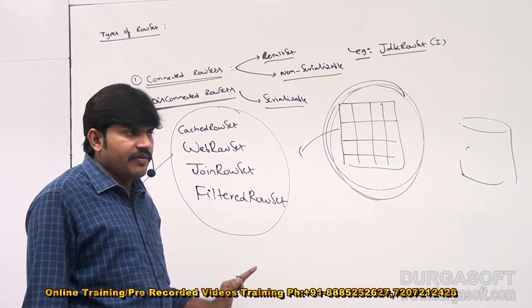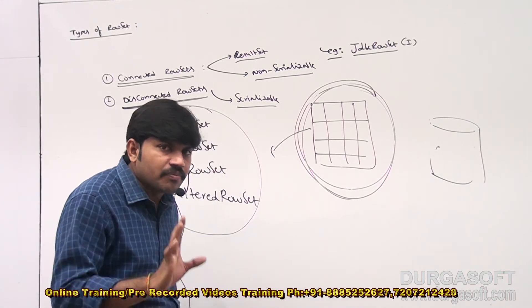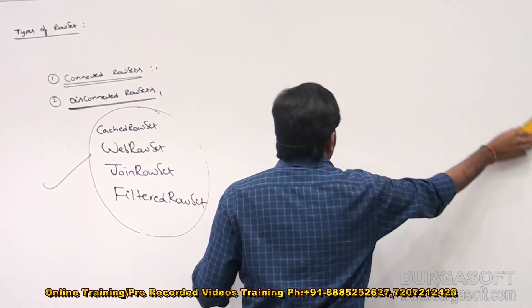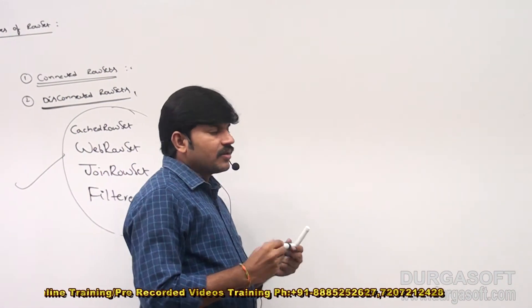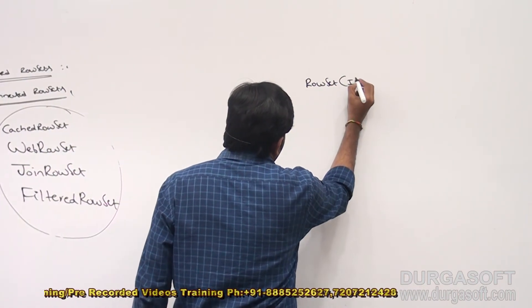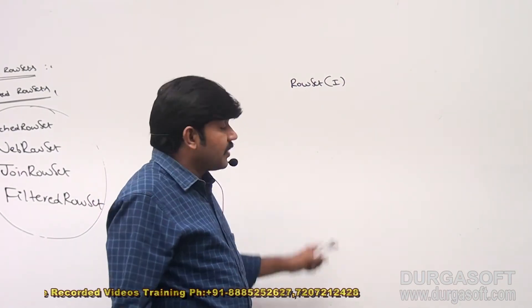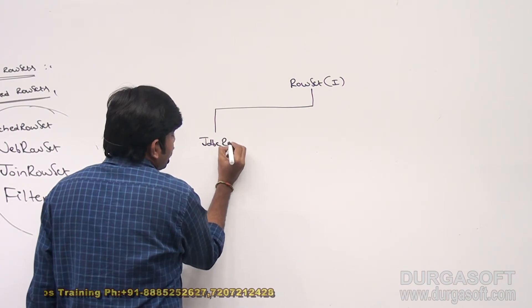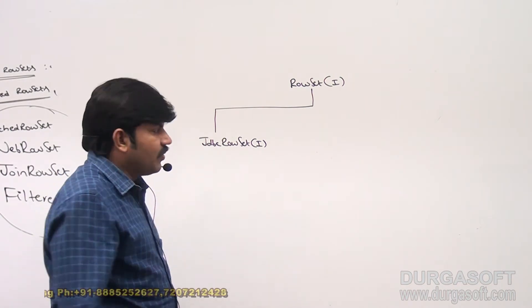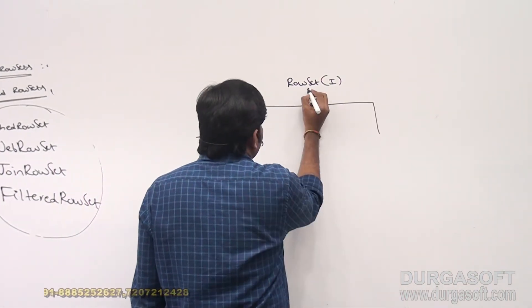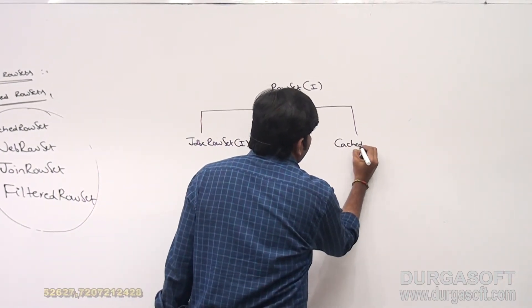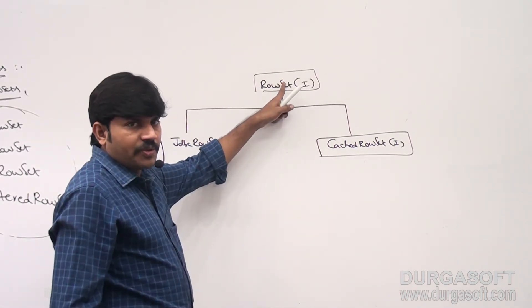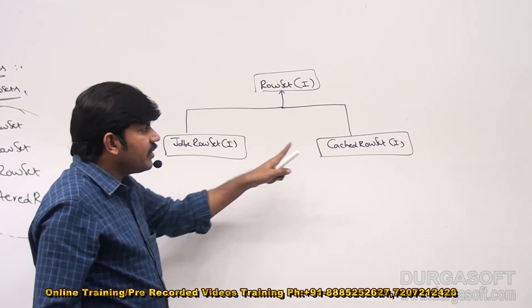Now, what is the relation between all these RowSets? This is very important. We have the RowSet interface. For this RowSet interface, one child interface is JdbcRowSet. The second child interface is CachedRowSet. So RowSet is the parent for these two child interfaces: JdbcRowSet and CachedRowSet.